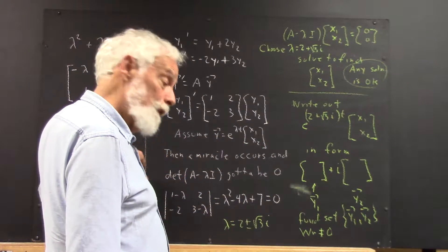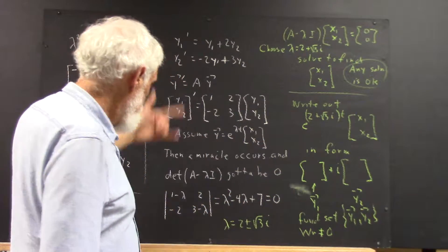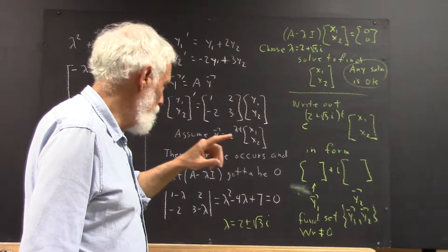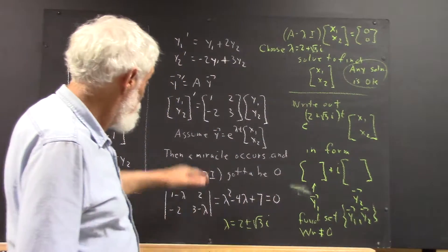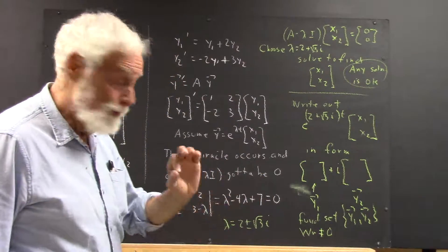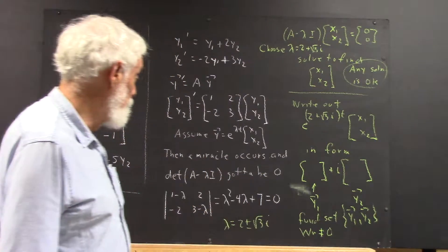Having made this assumption, as we did before, a miracle occurs, and we get determinant of A minus lambda I, which has to be 0. Now, you should understand the miracle, but if you don't, skip to this step and don't forget it.